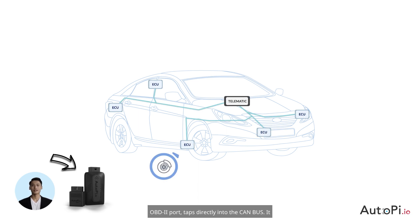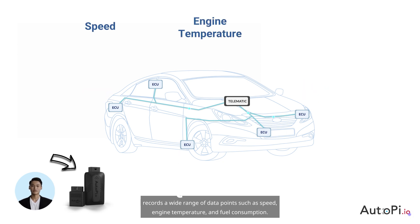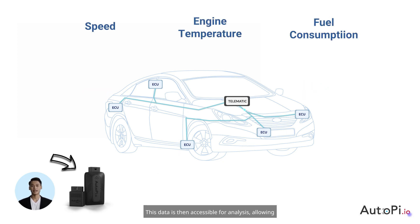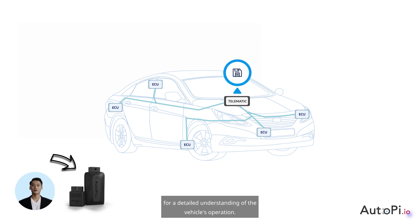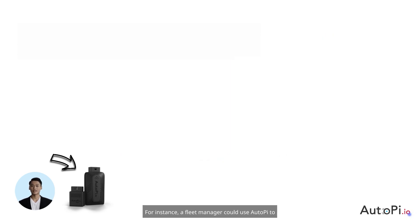The AutoPi, a small device plugged into the car's OBD2 port, taps directly into the CAN bus. It records a wide range of data points such as speed, engine temperature, and fuel consumption. This data is then accessible for analysis, allowing for a detailed understanding of the vehicle's operation. For instance,